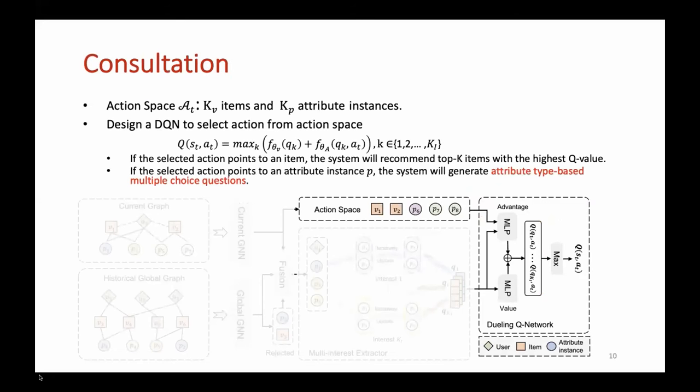A large action search space will bring a great negative impact on the efficiency. We select key v-items and key p-attribute instances as candidate action space. We design an improved dueling DQN to determine the next action. Based on the obtained K interest representations, we calculate each score between action and each interest and take the maximum value as Q value. We select the action with maximum Q value.